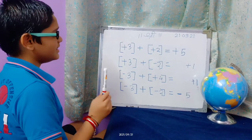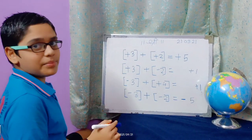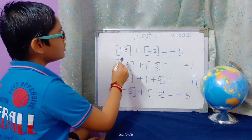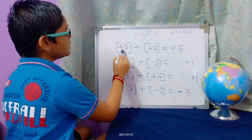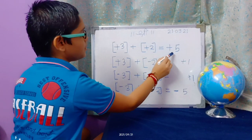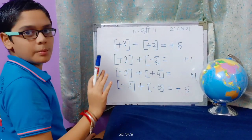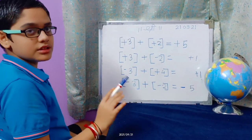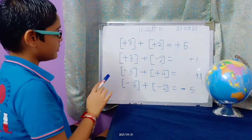So these are some simple addition rules of maths. First rule we learned is plus plus plus equals plus because common sign is plus here. Then plus plus minus equals minus or plus, depends upon greater number.